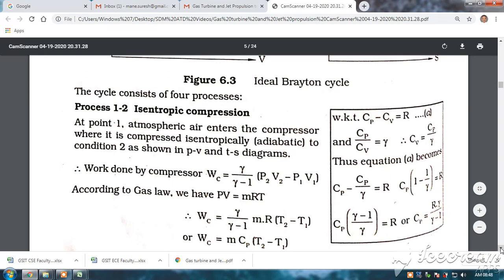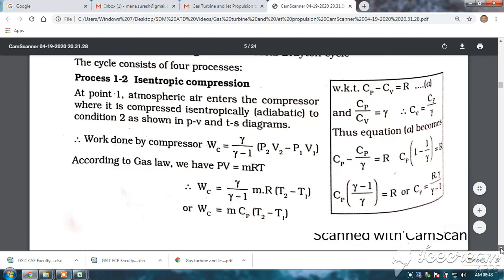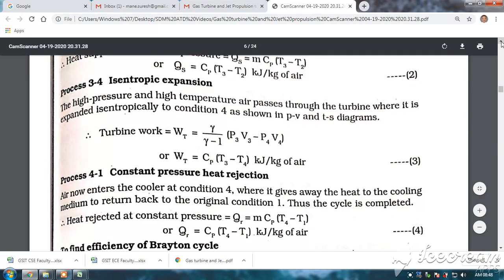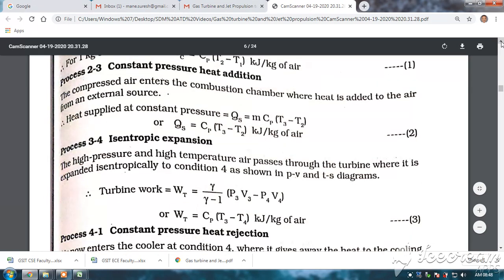Now, 1 to 2 is isentropic compression. 2 to 3 is constant pressure heat addition. In the 2 to 3 is constant pressure heat addition. That is, M·Cp·(T3-T2).